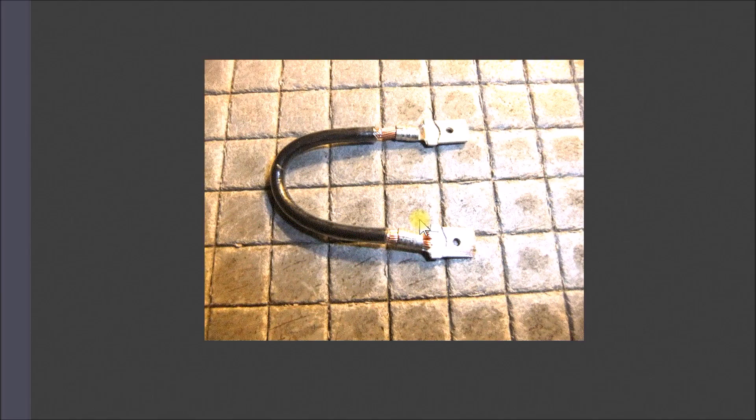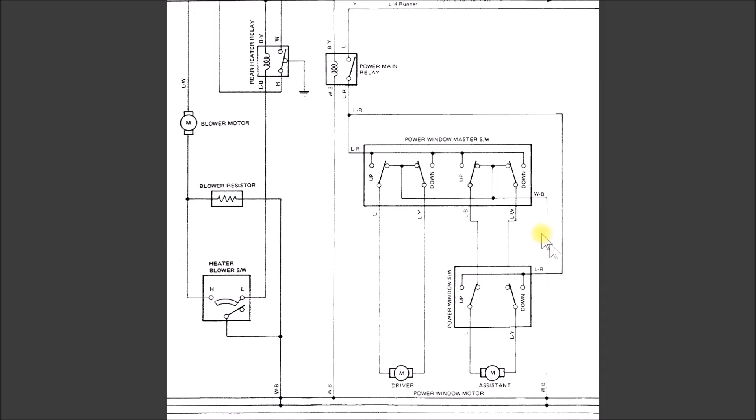This is the wiring diagram for the '85 4Runner and pickup, probably the '84 as well. I don't know when it switched. You can see here's the power main relay shown in that previous diagram, and all I did was just put a jumper right across here from the 12 volts down to the output.